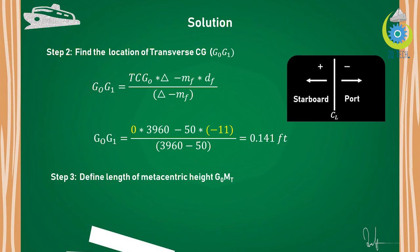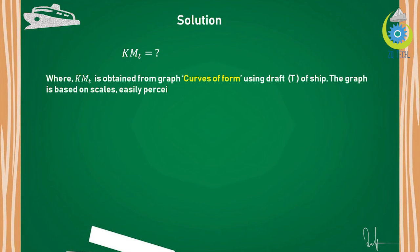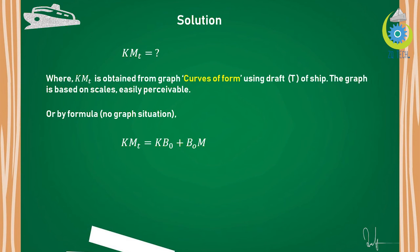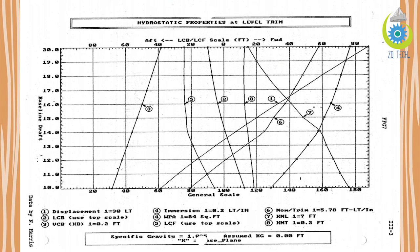Step 3: find the metacentric height G0MT. The formula is G0MT = KMT − KG0. KMT can be found by two methods. The first method uses a graph called the curves of form by using the ship's draft — this graph is easy to understand and we will discuss it now. If no graph is available, KMT can be found using formulas: KB equals the centroid of the waterplane area, and BM equals the moment of inertia divided by the displaced volume of the ship. From an exam point of view, both methods are important.